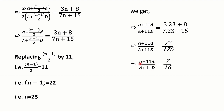Since A + 11D is t12 and capital A + 11 capital D is T12, we replace them accordingly. The right-hand side is copied as it is. Therefore, the ratio of the twelfth term of the two APs is 7 is to 16. That's our answer.